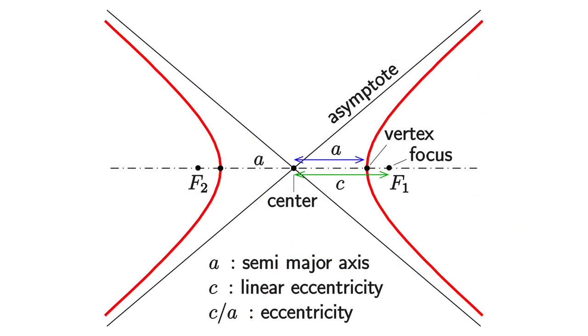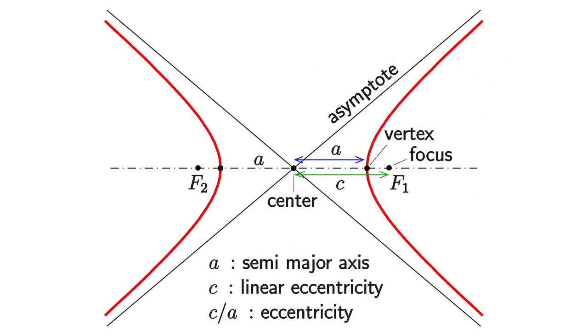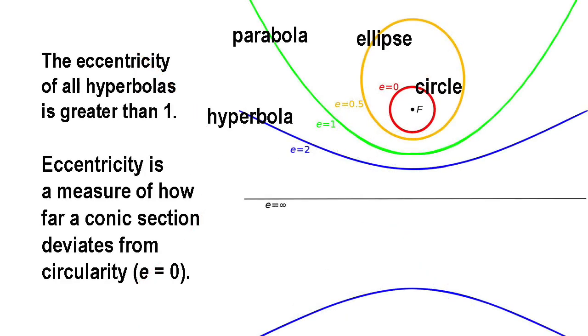Also, let the distance between the foci f2 and f1 equal 2c. Then the eccentricity, a measure of the flatness of the hyperbola, is given by e equals c over a. For all hyperbolas, e is greater than 1.